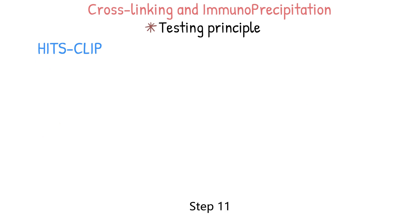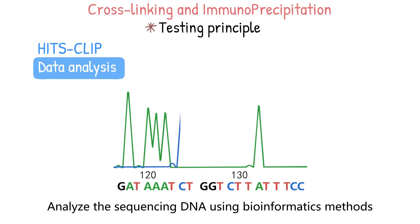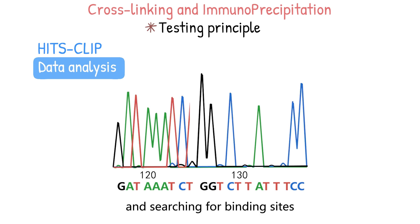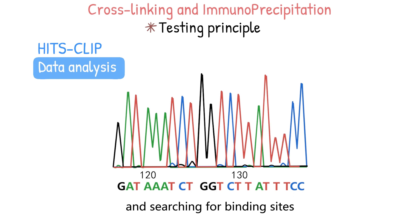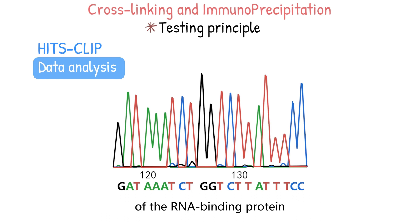Step 11: Data analysis. Analyze the sequencing data using bioinformatics methods including alignment, clustering, and search for binding sites to ultimately identify the precise binding sites of the RNA-binding protein.